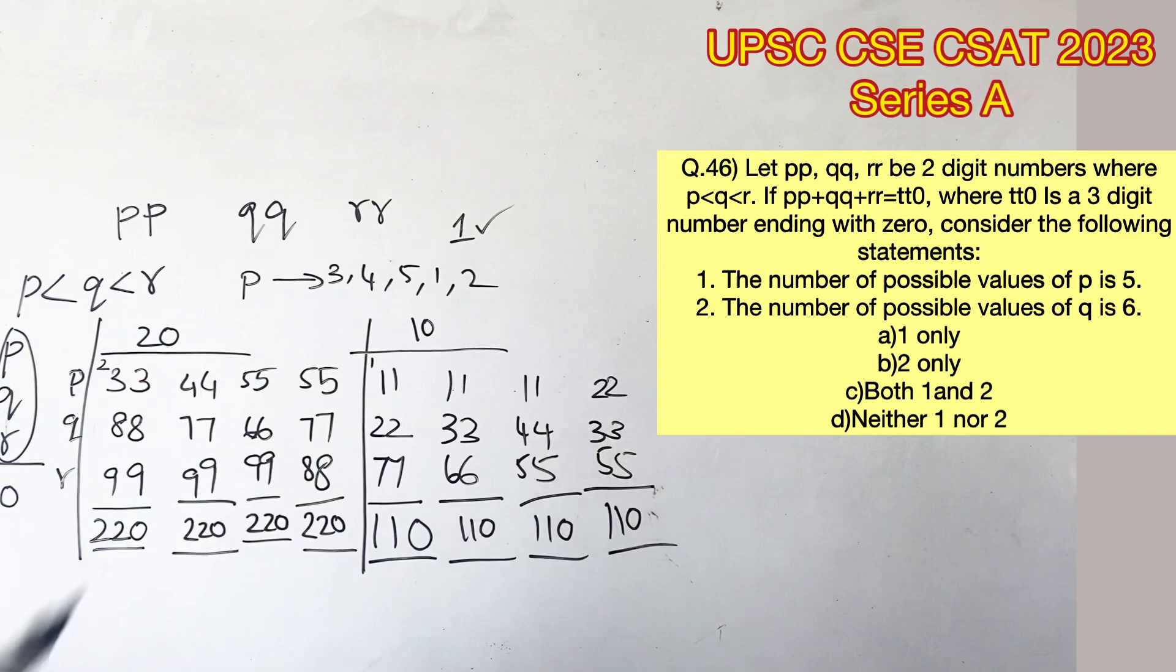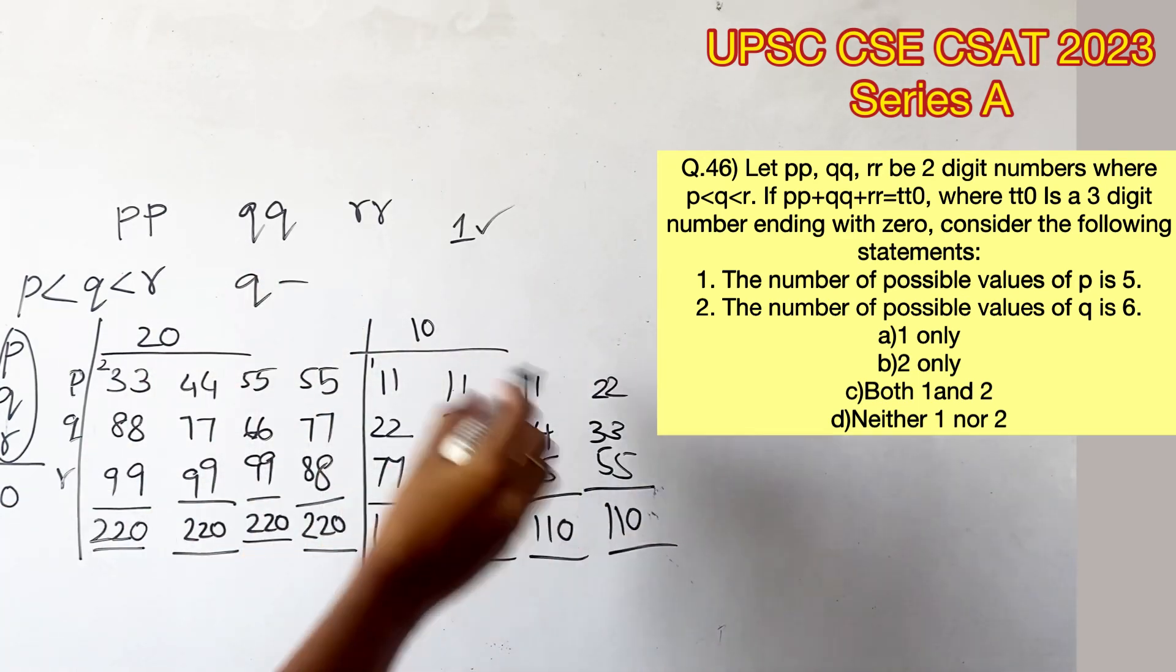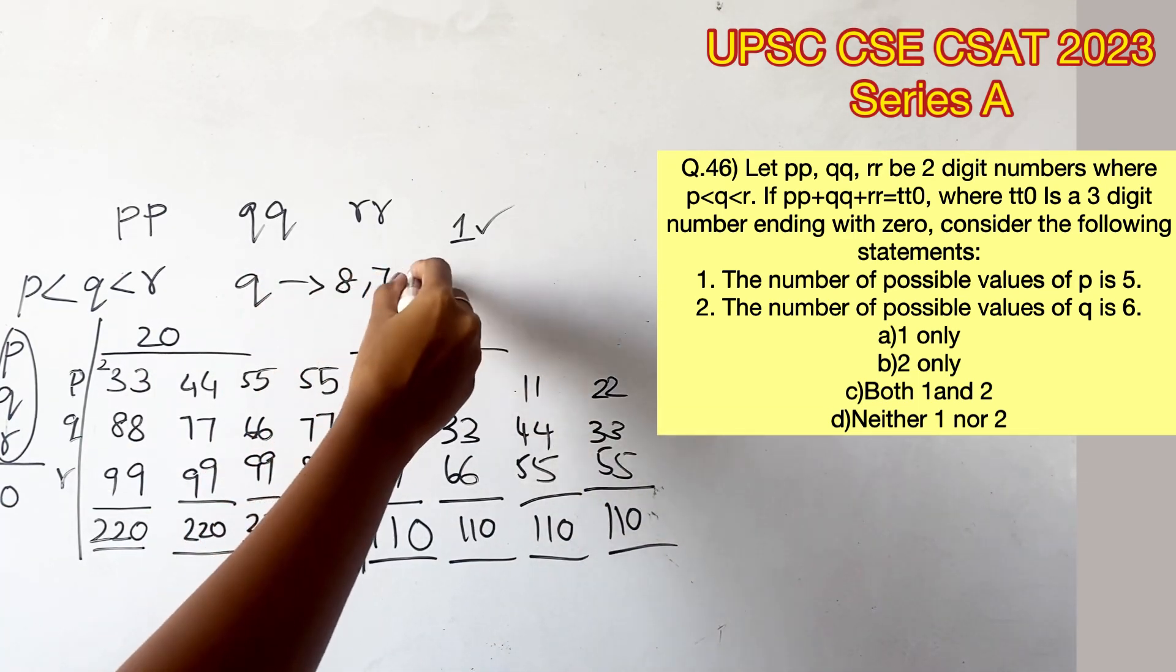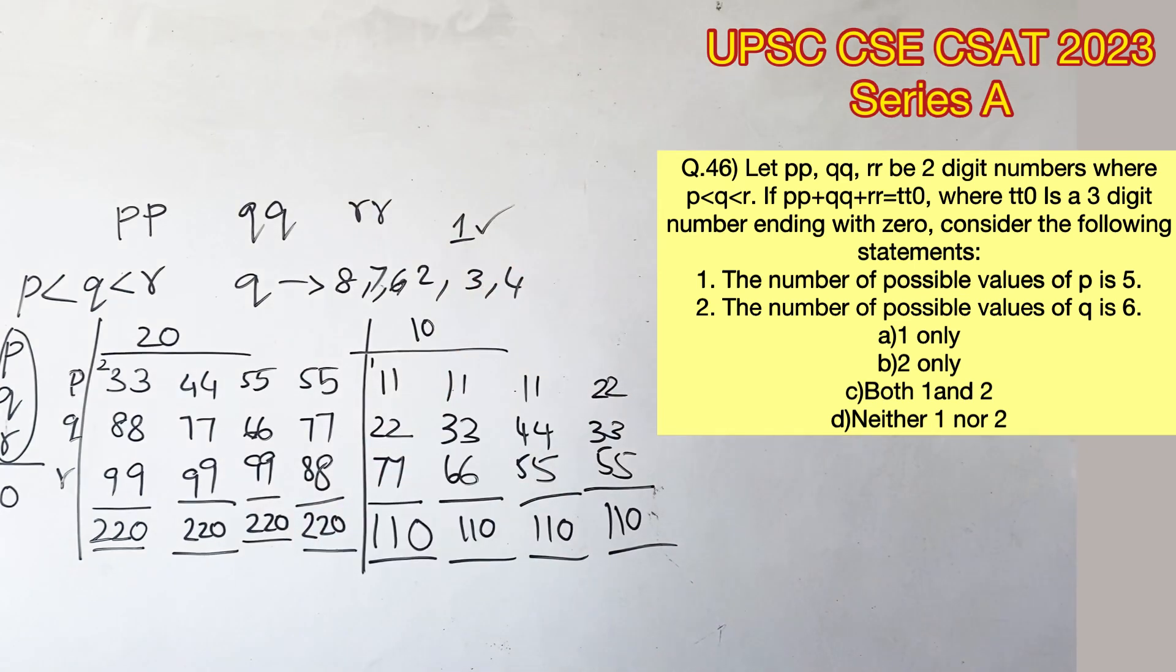The second statement says the number of possible values of Q is 6. The possible values of Q are 8, 7, 6, 2, 3, and 4. Therefore, statement 2 is also right.